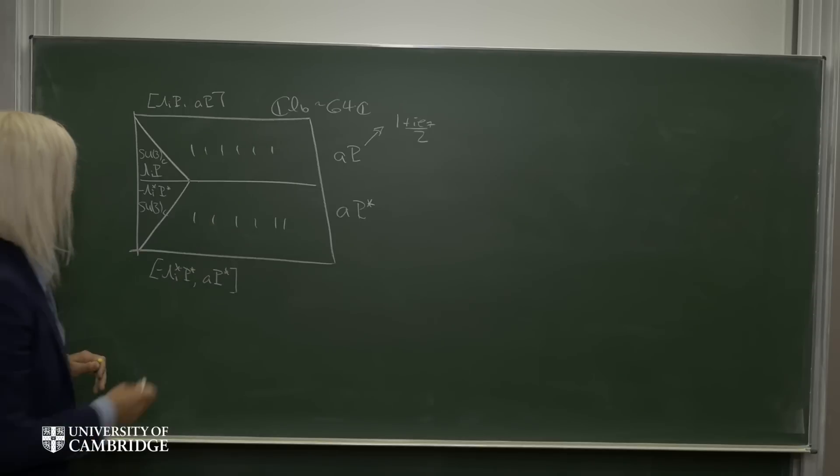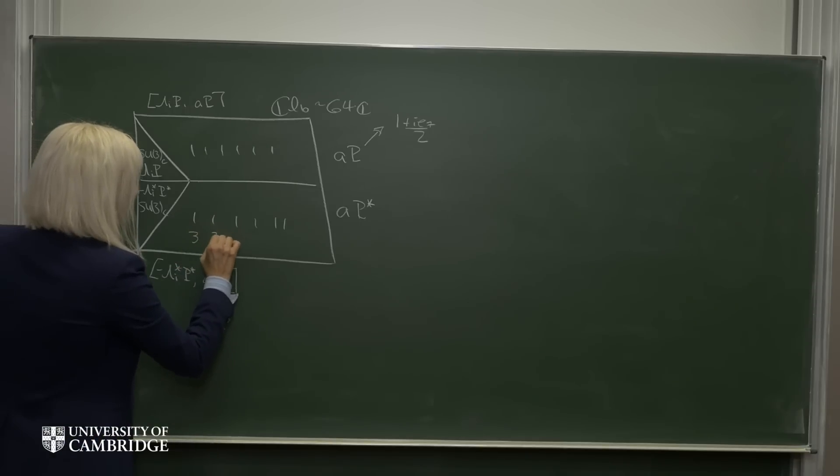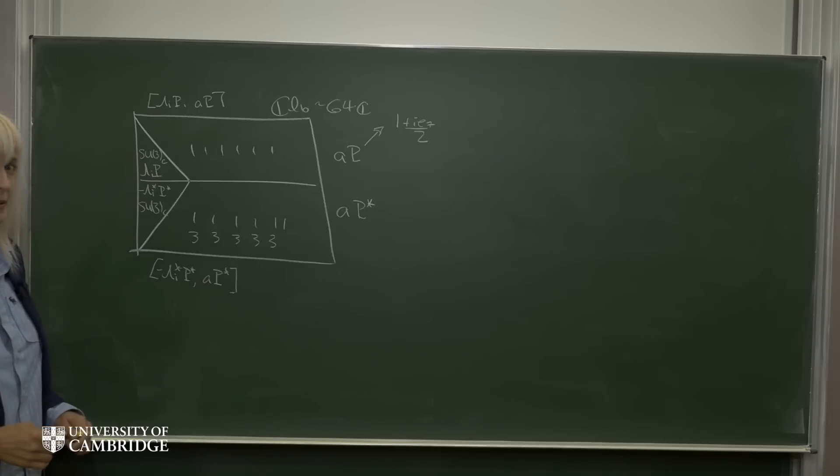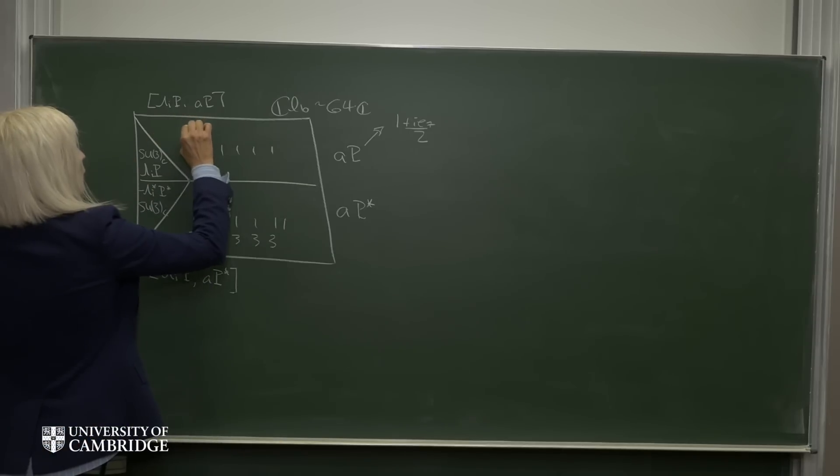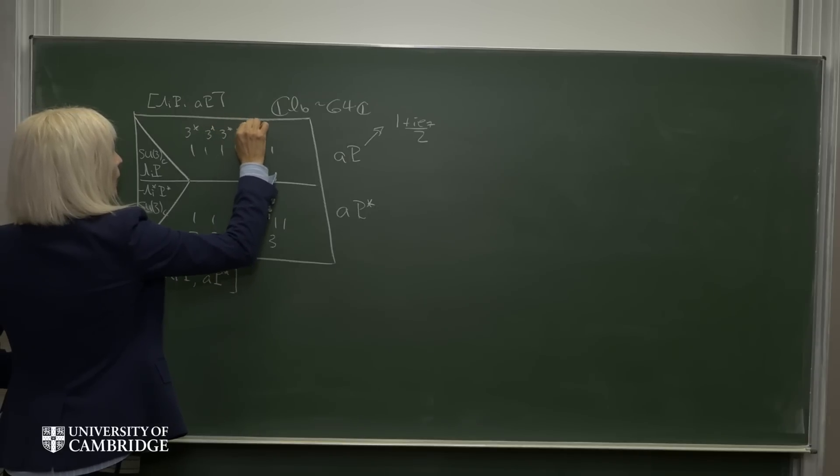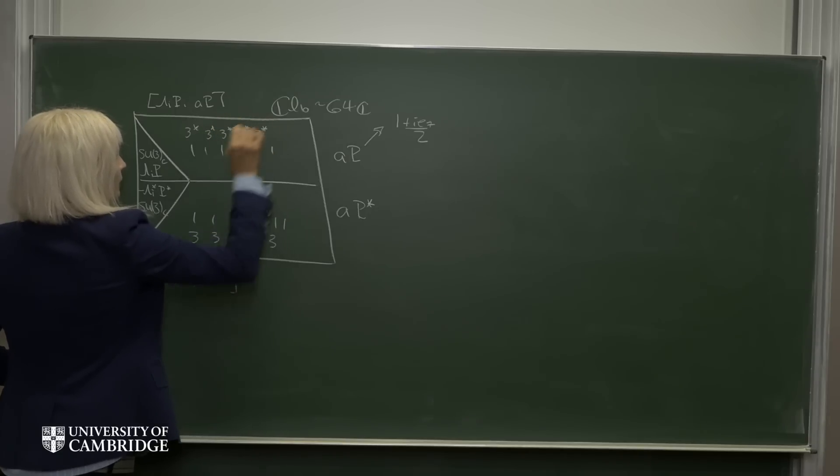And then again here in the bottom, we find that we get 1, 2, 3, 4, 5 triplets. In the top half space, we find we get 1, 2, 3, 4, 5 triplets under SU3.